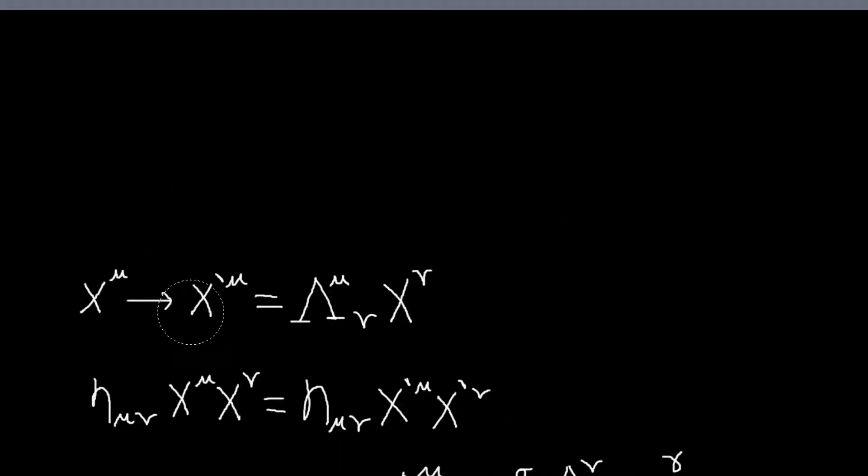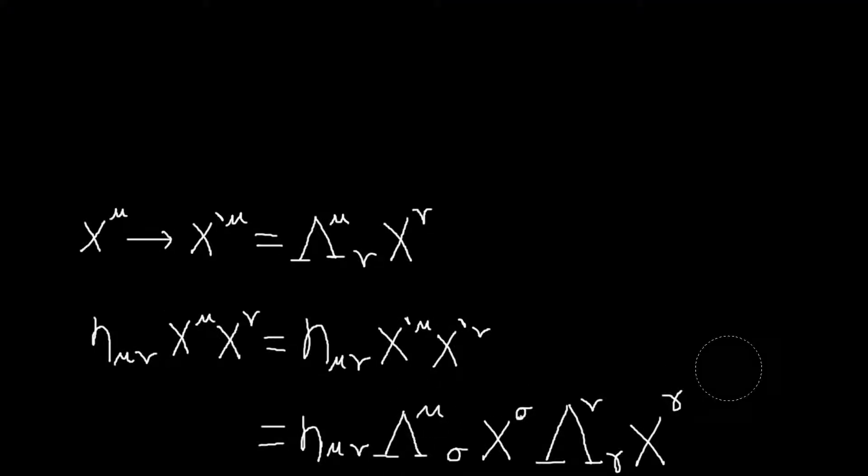So we have our transformation to our coordinates, the Lorentz transformation. And we would like that under this transformation, the line element or the metric is invariant. So we can check that by plugging in our expression for our transformed coordinates here. And so we'll get this.